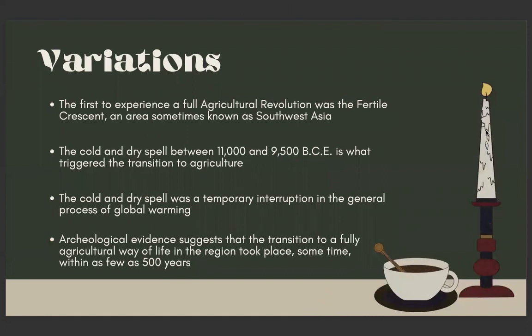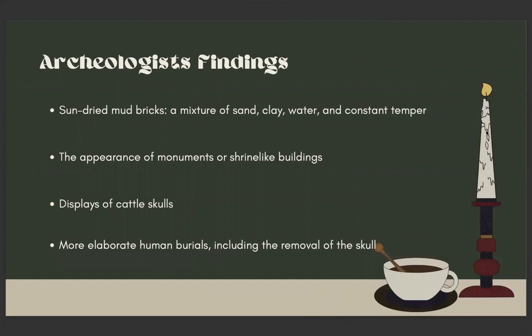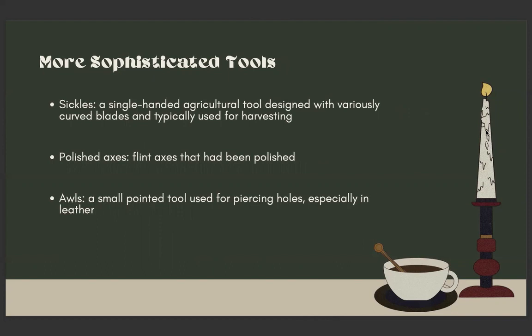Next, variations. The first to experience a full agricultural revolution was the Fertile Crescent, an area sometimes known as Southwest Asia. The cold and dry spell between 11,000 and 9,500 BC is what triggered the transition to agriculture — a temporary interruption in the general process of global warming. Archaeological evidence suggests that the transition to a fully agricultural way of life in the region took place within as few as 500 years. Some archaeologists' findings were sun-dried mud bricks, a mixture of sand, clay, water, and constant temper — temper also meaning temperature. There was also the appearance of monuments or shrine-like buildings, displays of cattle skulls, and more elaborate human burials, including the removal of the skull. More sophisticated tools archaeologists found were sickles — a single-handed agricultural tool designed with variously curved blades typically used for harvesting — polished axes, flint axes that have been polished, and awls, a small pointed tool used for piercing holes, especially in leather.